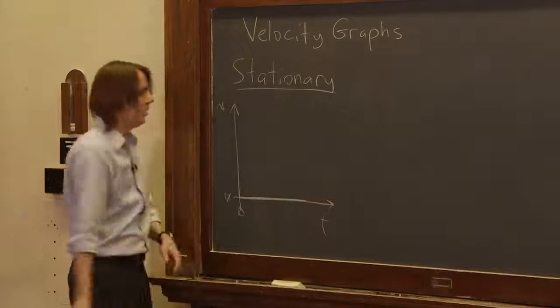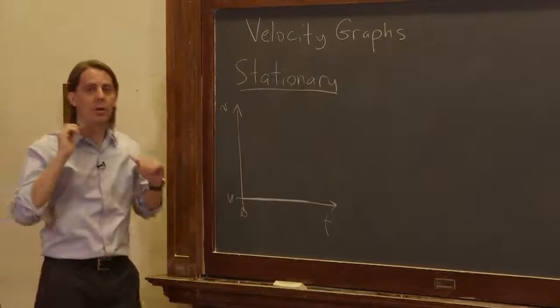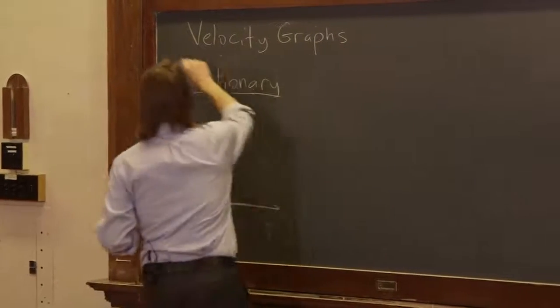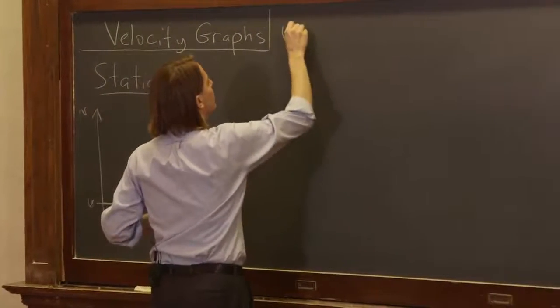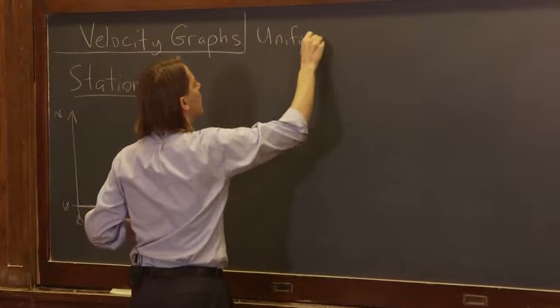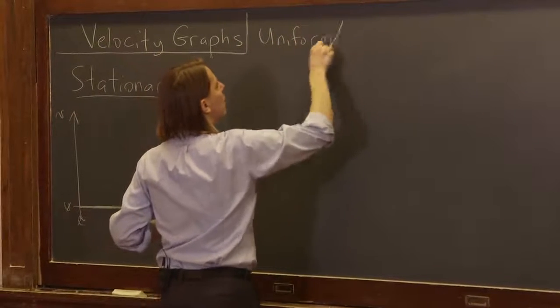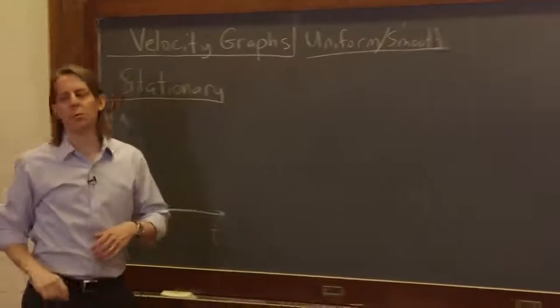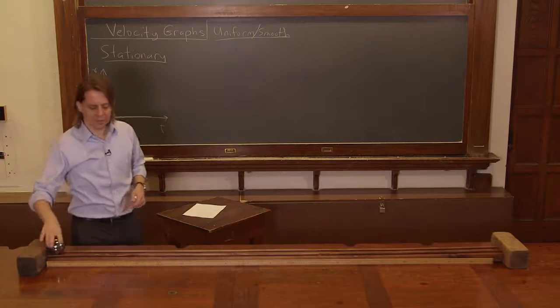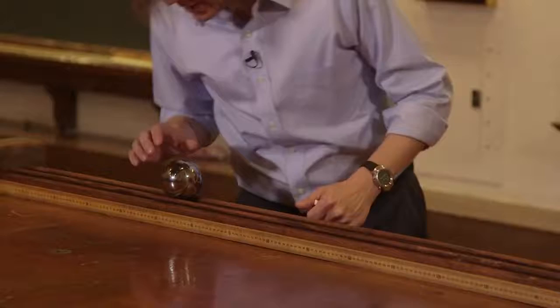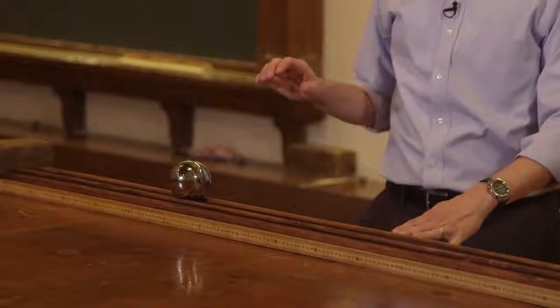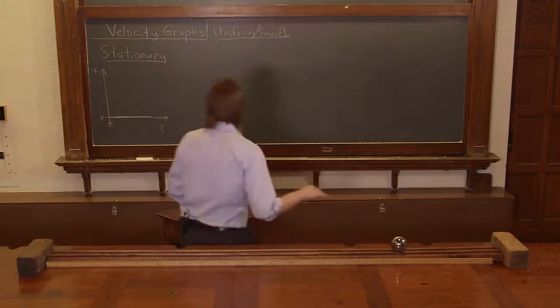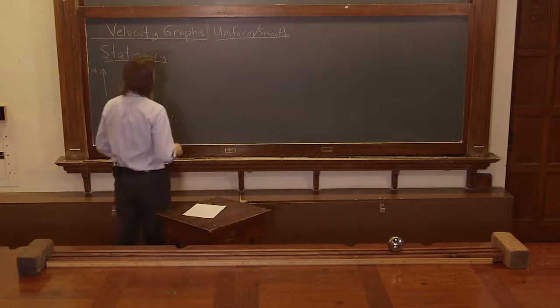Let's get something a little bit better. Let's now do uniform motion, or as I also call it, smooth motion. Let's let Hal start out at some position, say 50 centimeters, at rest, and then we get him going at a constant velocity.